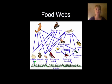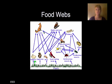A food web can get a little messy because a lot of animals, especially when you get to these top predators, eat lots of different animals — they don't just eat one thing. You'll see it's a little bit like a web.